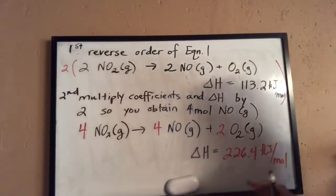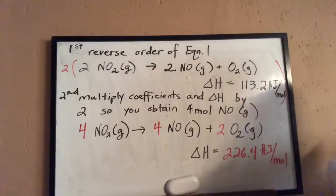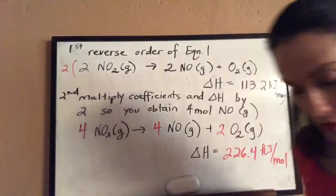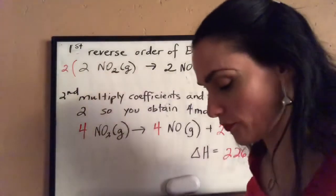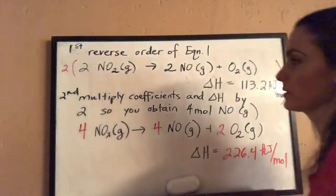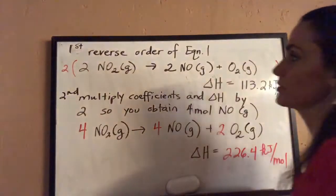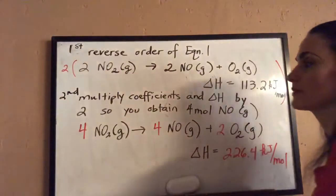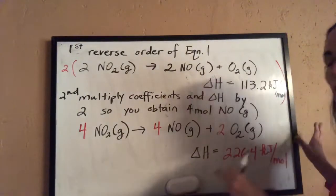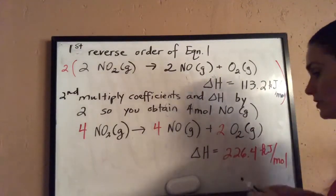At this point we have only altered the first equation. The second equation — two moles of dinitrogen monoxide gas plus three moles of oxygen gas yielding four moles of nitrogen dioxide — has not been altered. We changed the sign of equation one because we reversed it, and multiplied everything by two. Now we take this altered equation one and combine it with the unaltered equation two.